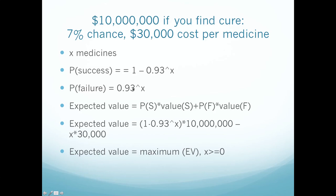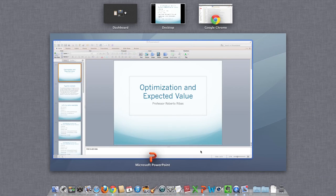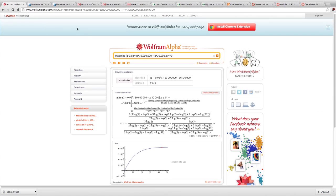With x medicines, the probability of failure is 0.93 raised to x, and the probability of success is 1 minus 0.93 to the x. So the expected value is: (1 minus 0.93 to the x) times $10 million, minus x times $30,000. We want to find a maximum on this expected value, given that x is greater than or equal to 0. You could keep going one at a time, or graph this on your calculator. I'm going to use Wolfram Alpha for this.